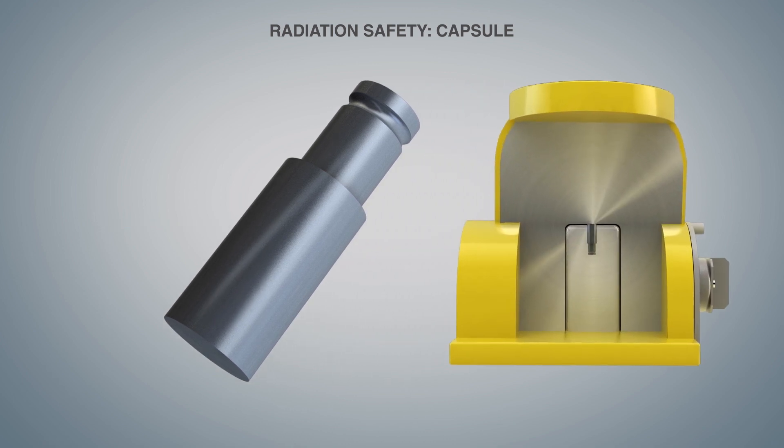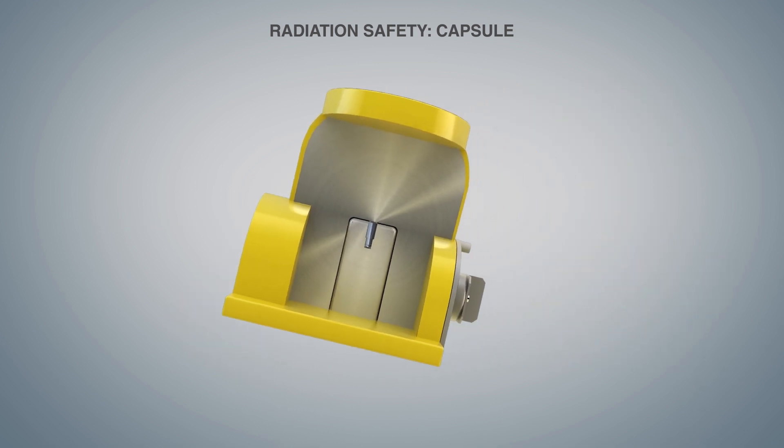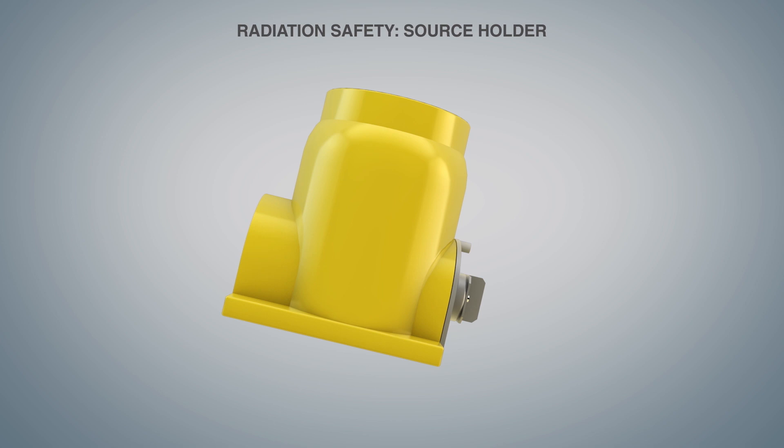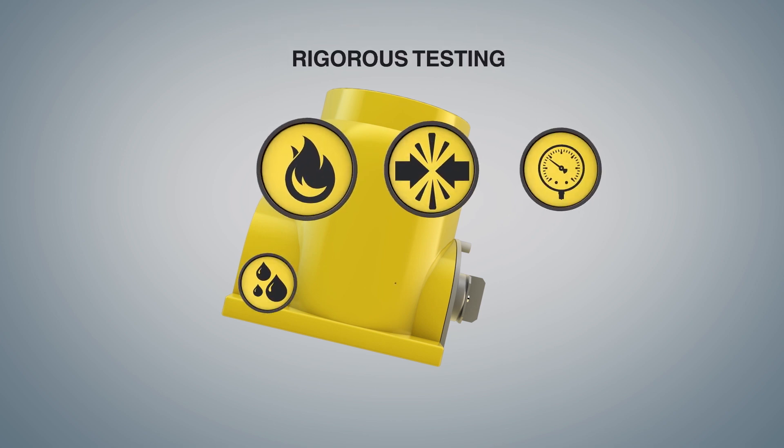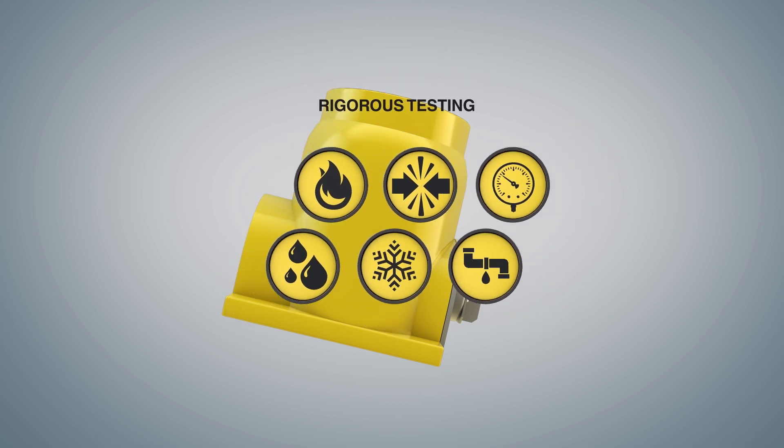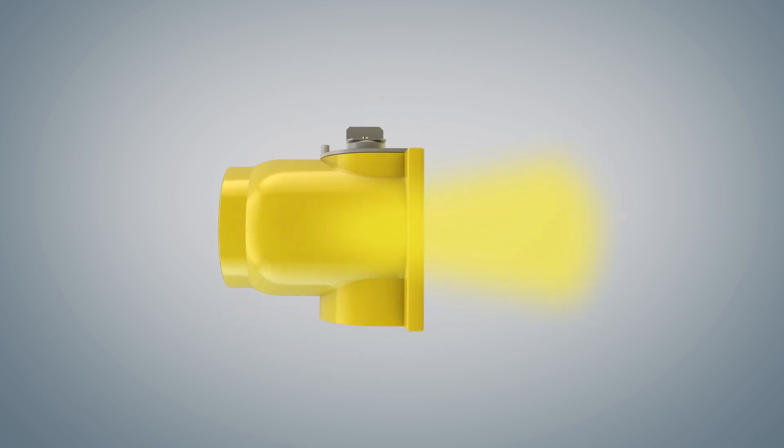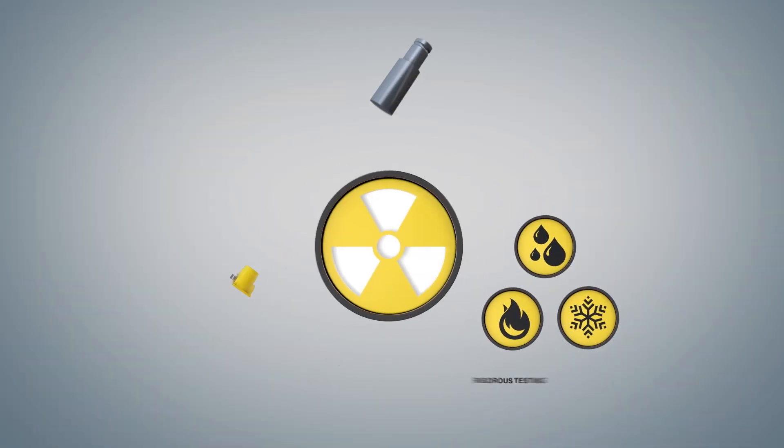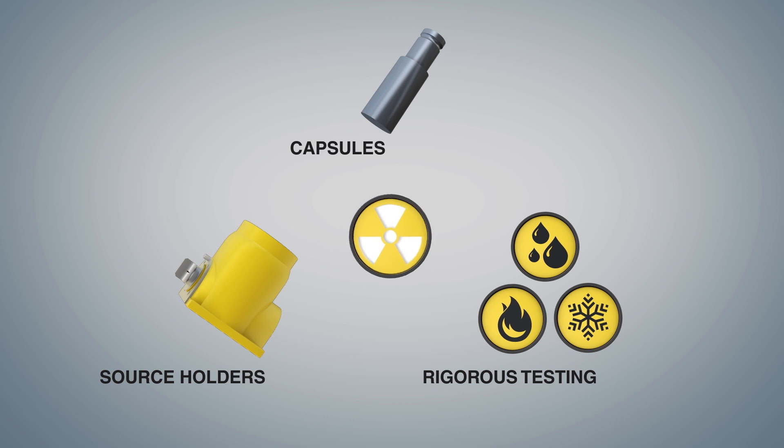But the chances of accidental contact are zero because each nuclear source is housed in a protective source holder. A source holder is a steel or lead-lined encasement that shields the outside environment from radiation. Source holders are rigorously tested to ensure they survive extreme conditions, and they are designed so radiation travels only from a guided channel called a collimator. These combined safety measures severely limit exposure to radiation.